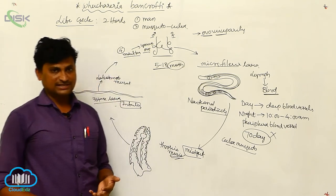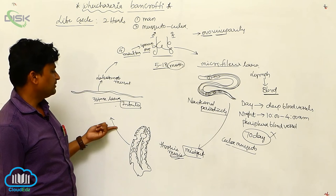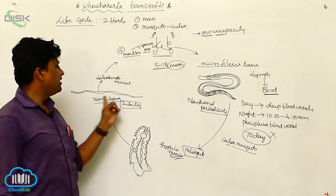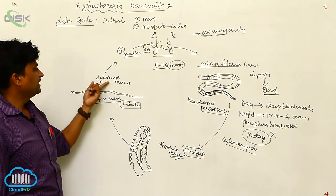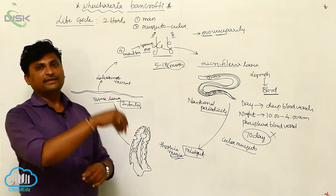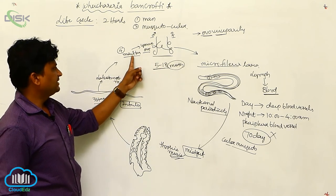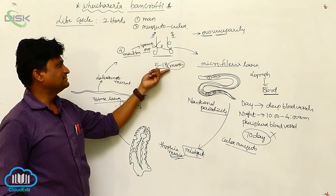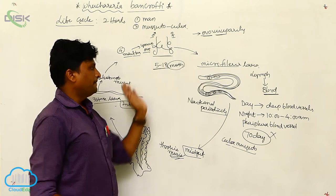Inside the Culex mosquito, the sheath of the microfilaria larvae dissolves, and the larvae migrate to the thoracic muscles. Molting occurs, forming a sausage-shaped second-stage larva, then a third-stage larva — a very long, highly infective stage. These larvae reach the labium of the mosquito. When the mosquito bites a new person, the larvae enter the blood vessels, undergo a fourth molt, and form young ones. Within five to eighteen months, they become reproductively active, continuing the life cycle.